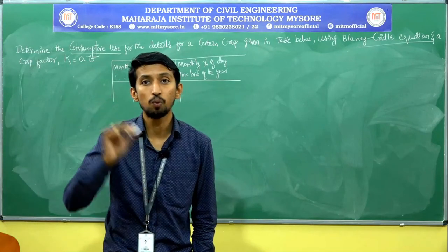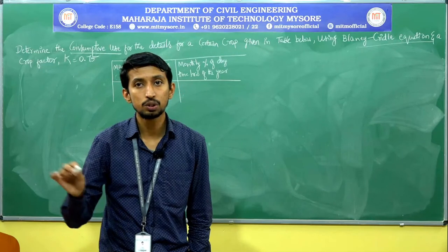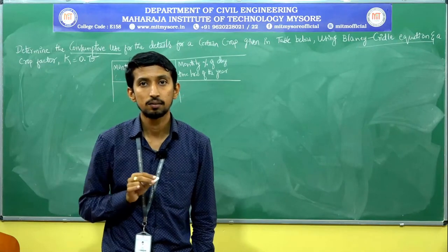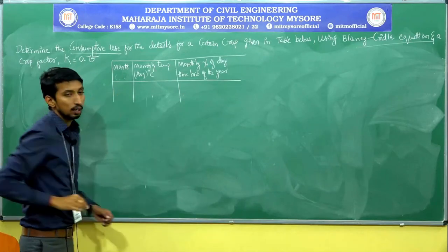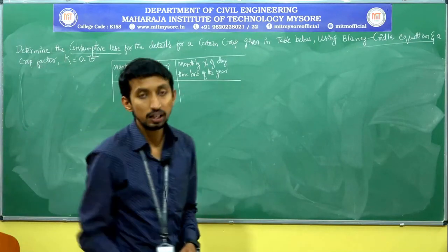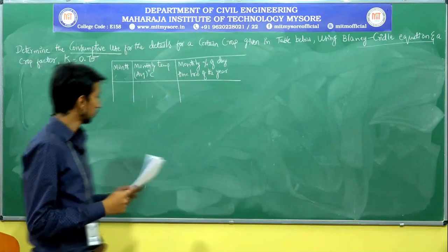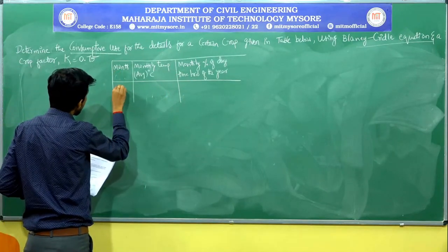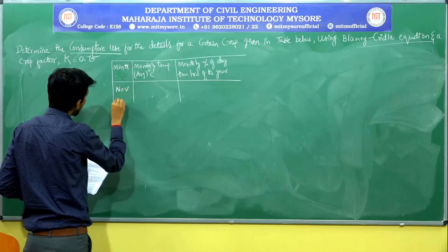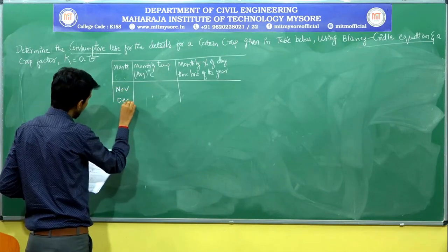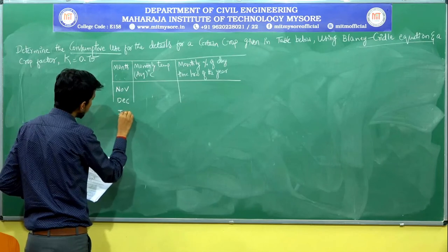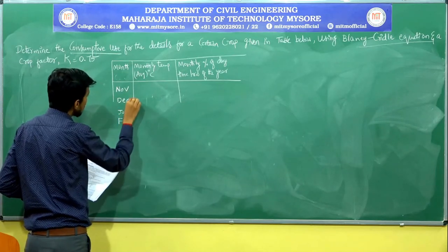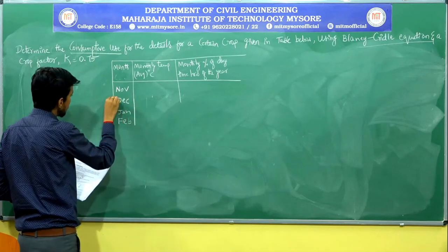During summer the percentage of sunshine is more, while during June, July, and August the percentage of sunshine is less. The four months given in the problem are November, December, January, and February.